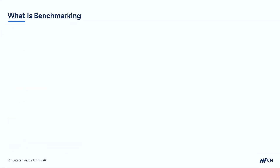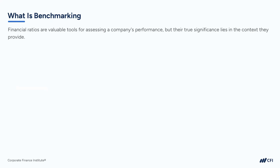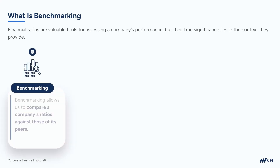Let's turn now to peer and industry benchmarking. As we have already seen, financial ratios are valuable tools for assessing a company's performance, but their true significance lies in the context they provide. Benchmarking allows us to compare a company's ratios against those of its peers operating in the same sector, and by doing so, we gain insights into how the company performs relative to its competitors and the industry as a whole.